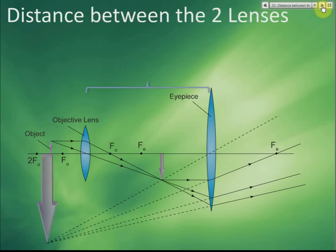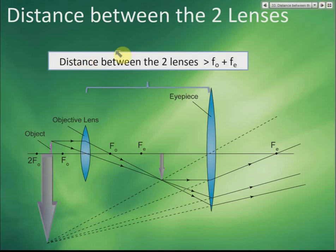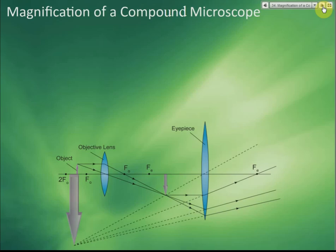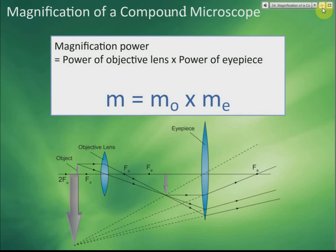For the telescope, the distance between the two lenses is fo plus fe. But for the compound microscope, the distance between the two lenses is greater than fo plus fe. Here fo is the focal length of the objective lens and fe is the focal length of the eyepiece, so the lens separation in a microscope exceeds fo plus fe.